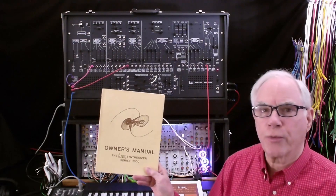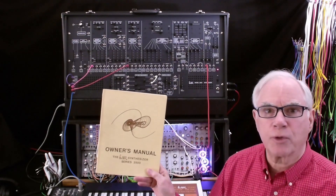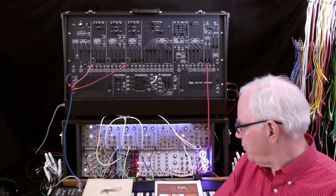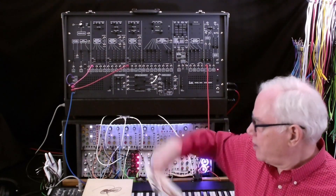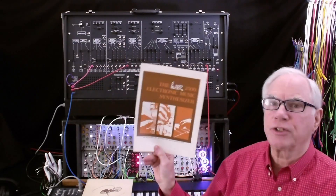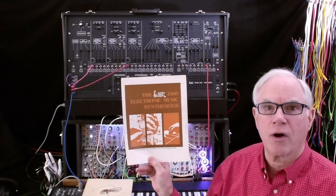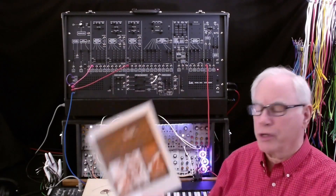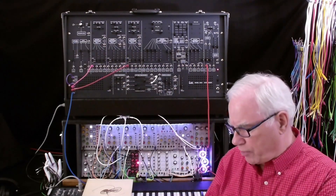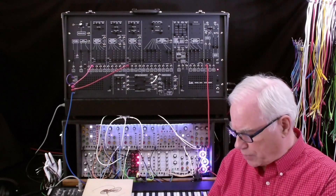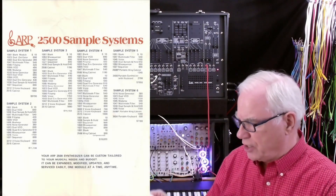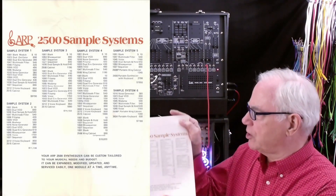This is an original ARP 2500 owner's manual. This is an original ARP 2500 brochure, and on the next to last page there are six sample systems.